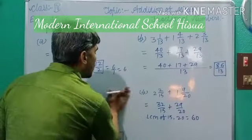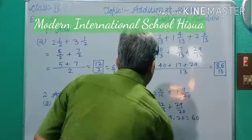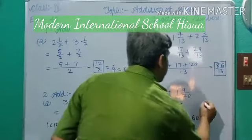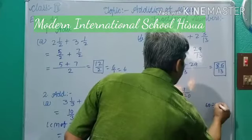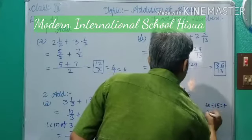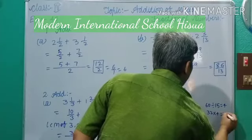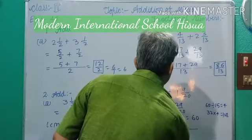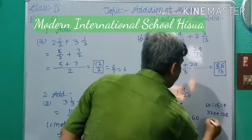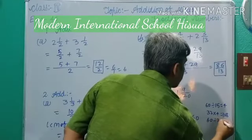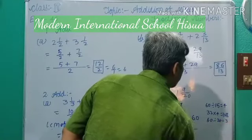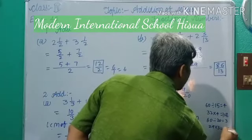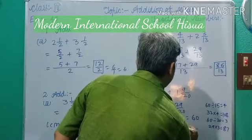Draw a line and write down the LCM. Dear students, same process: 60 divided by 15 equals 4, and 32 multiplied by 4: 4 eights are 32, so write down 128. Plus. Now same process: 60 divided by 20 equals 3. Dear students, 29 multiplied by 3: 3 sixes are 18, 3 eights are 24 — write down 87.